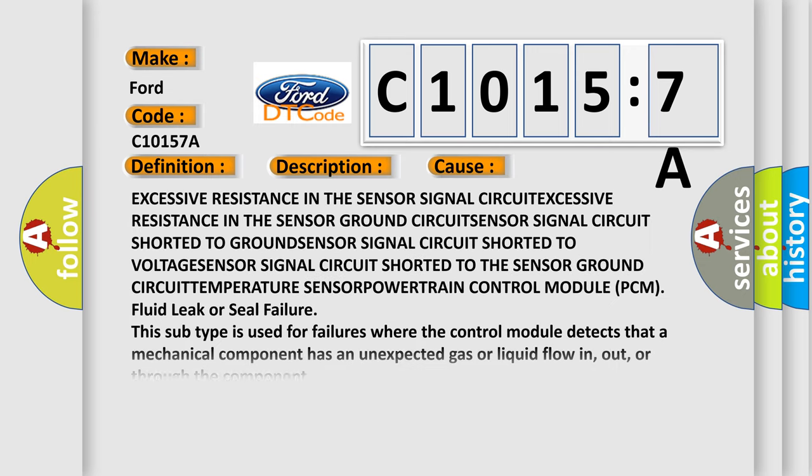This diagnostic error occurs most often in these cases: excessive resistance in the sensor ground circuit or sensor signal circuit. This subtype is used for failures where the control module detects that a mechanical component has an unexpected gas or liquid flow.